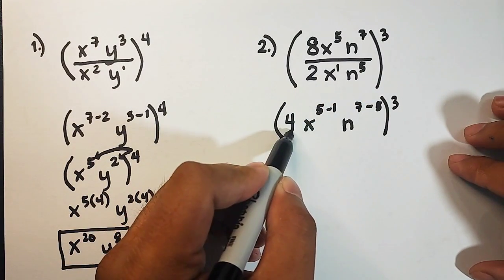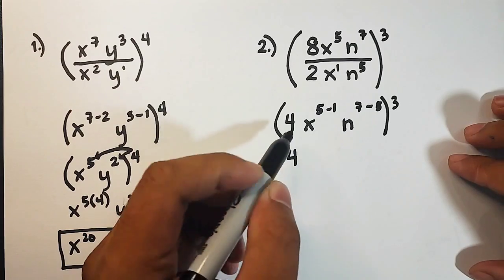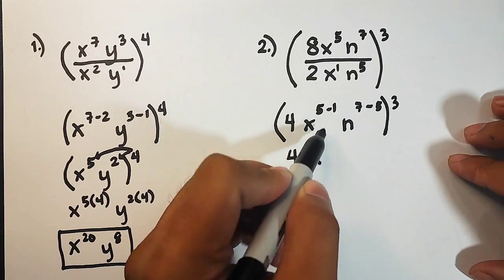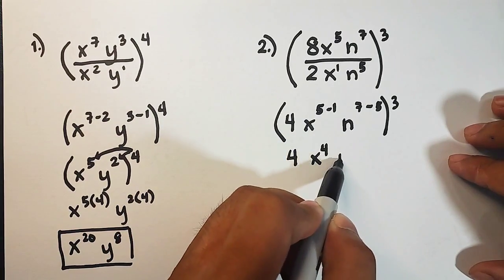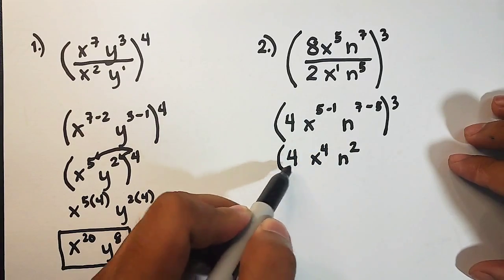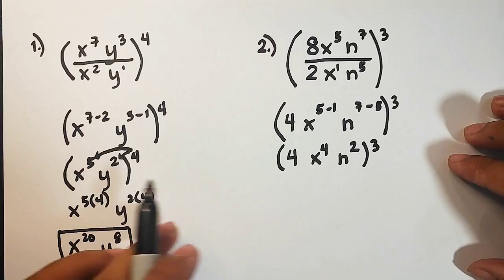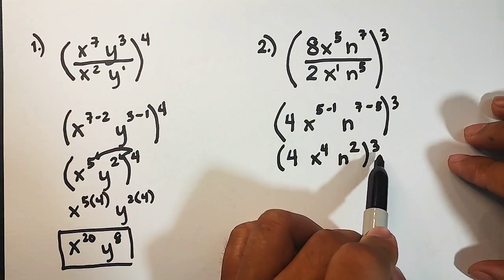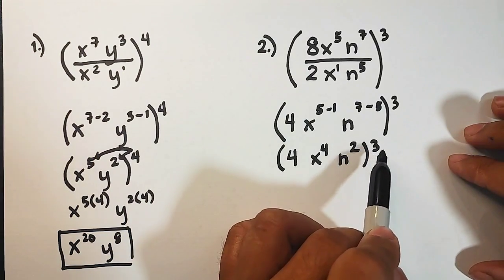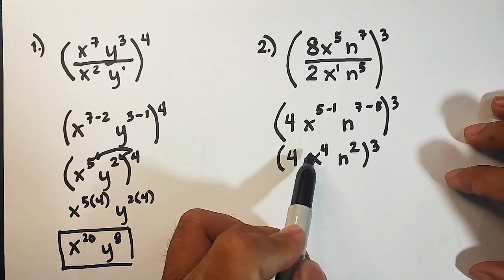And close it by parenthesis and then copy your original exponent outside. Here, copy your 4, then x raised to 4, n raised to 2, then close it by 3. Same process. You will multiply this exponent here outside and the exponents inside.